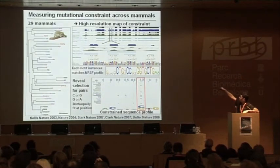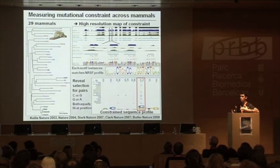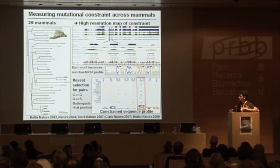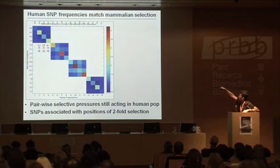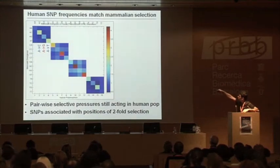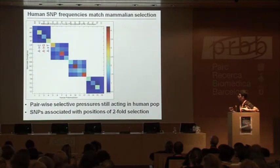So how does this mutational constraint measured across mammals relate to the constraint within the human population? One could argue that mutational patterns have changed and there are different pressures driving human evolution. Well, the answer is that human SNP frequencies very strongly match the pairwise changes predicted from mammalian selection. If you look at all 16 by 16 pairwise combinations of SNPs, what you end up with is a diagonal where the SNP found in the human population in fact matches the two-fold selective pressure found across species.